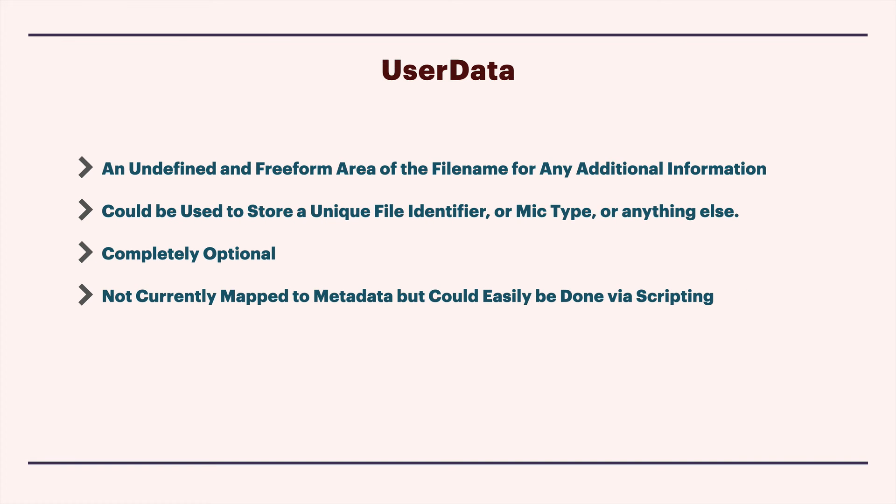Lastly, user data is an area of the file name that comes at the very end after the final underscore, and it's completely freeform - there are no rules about what can be stored here. It could be used to store any additional piece of information: a microphone type, a recorder, a location, any other information you deem necessary to store in the file name. It's also completely optional. Right now we don't map this data in any of the tools to any metadata field, but because it's mapped into the file name in a rigid way, it would be pretty easy to take this block of information and apply it to a metadata field later via some scripting.